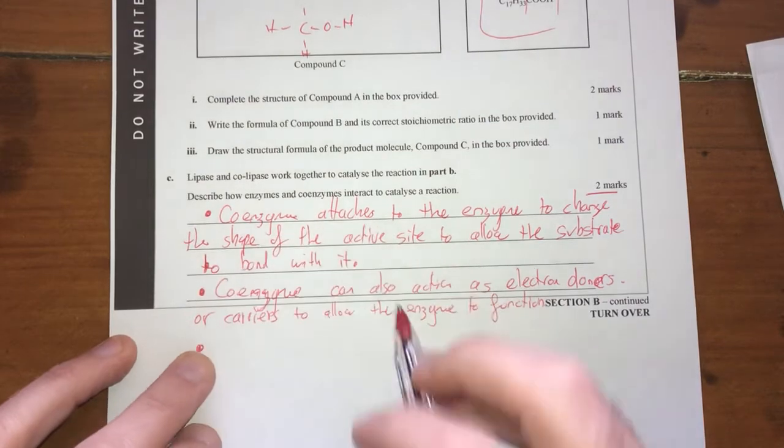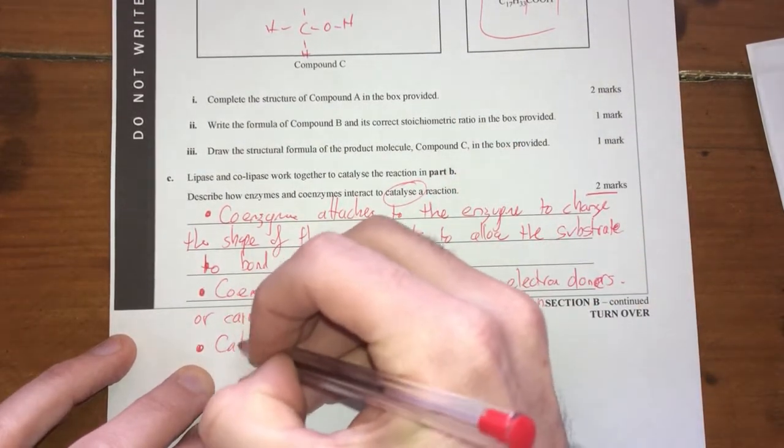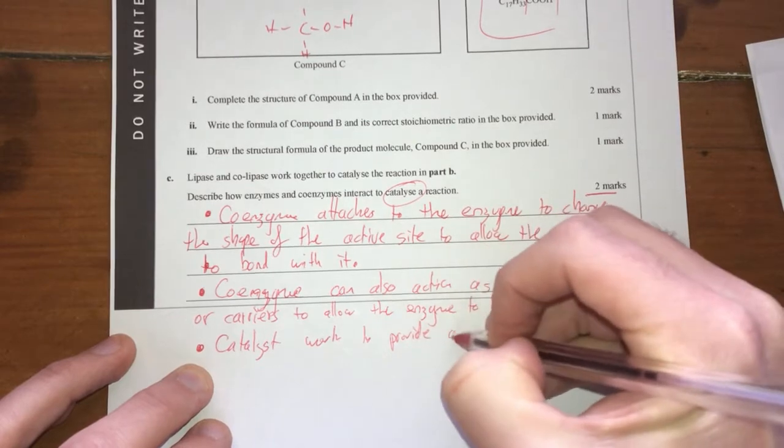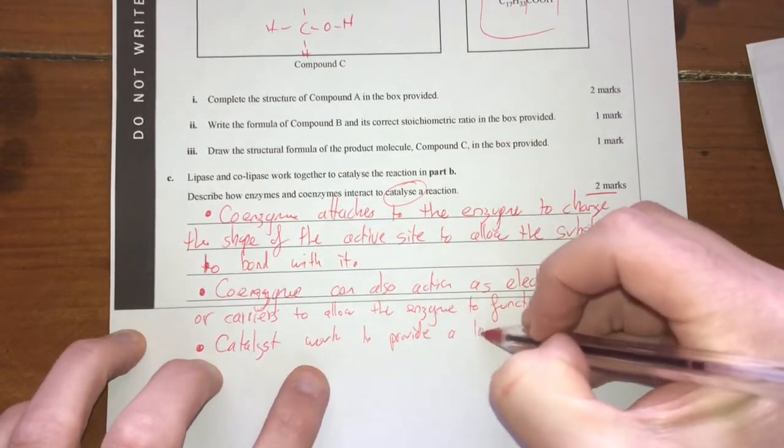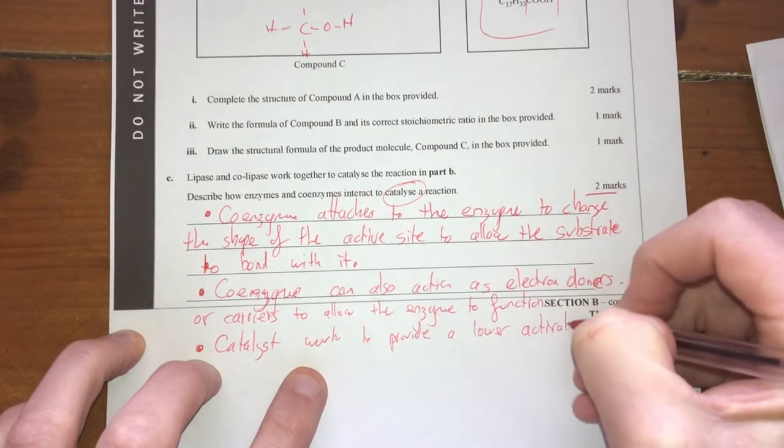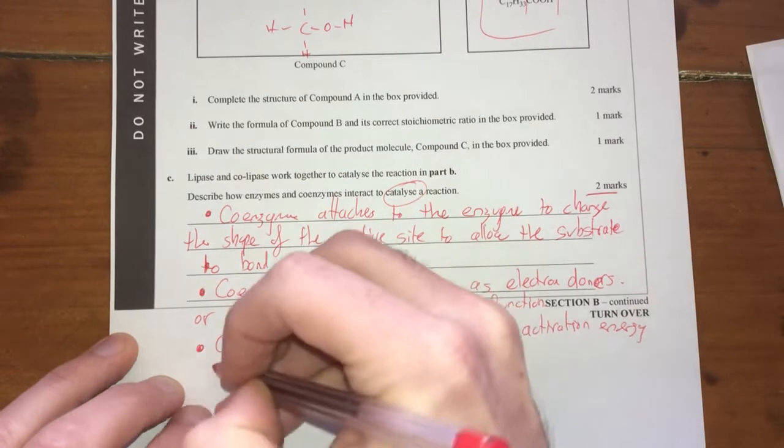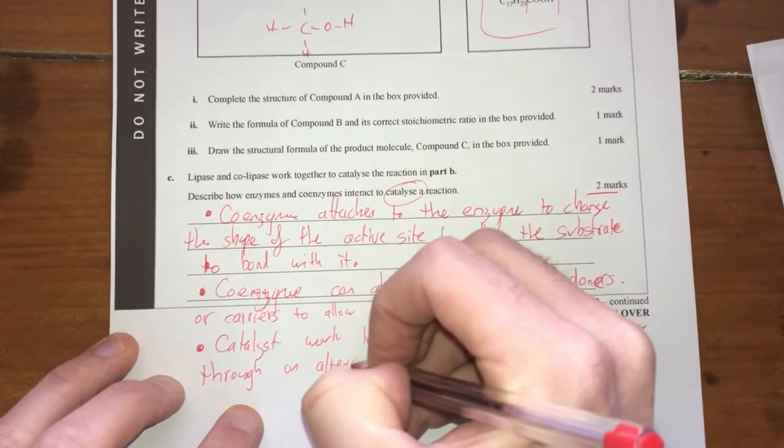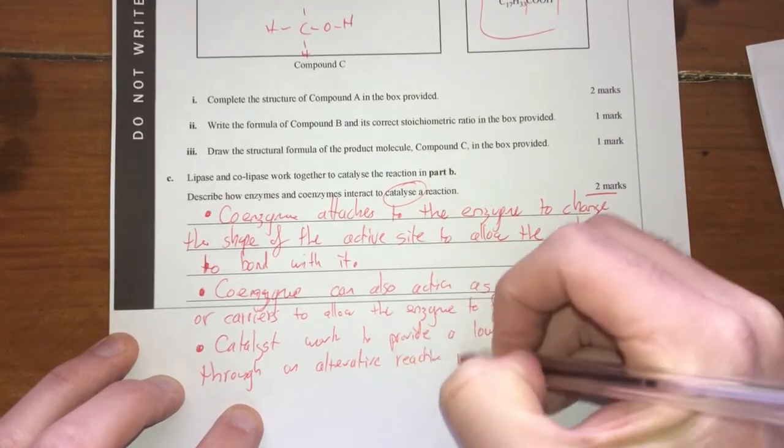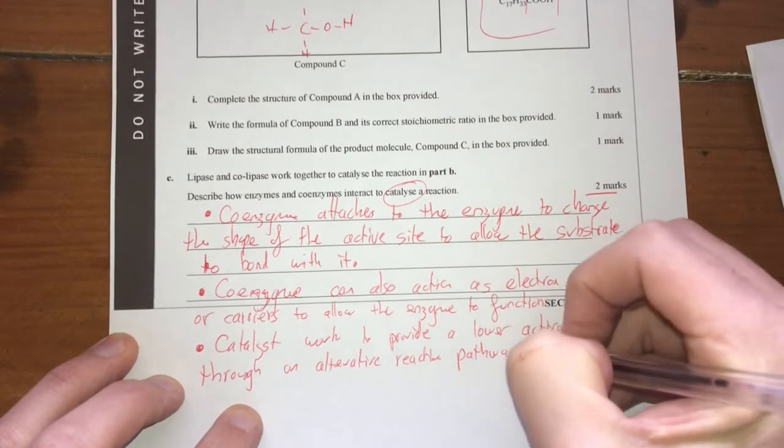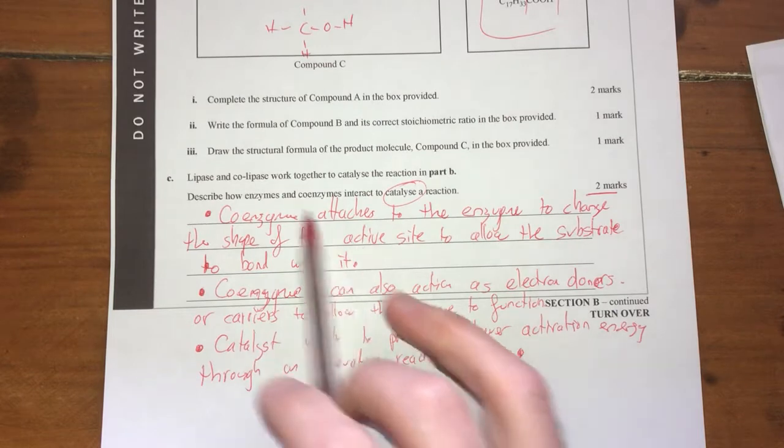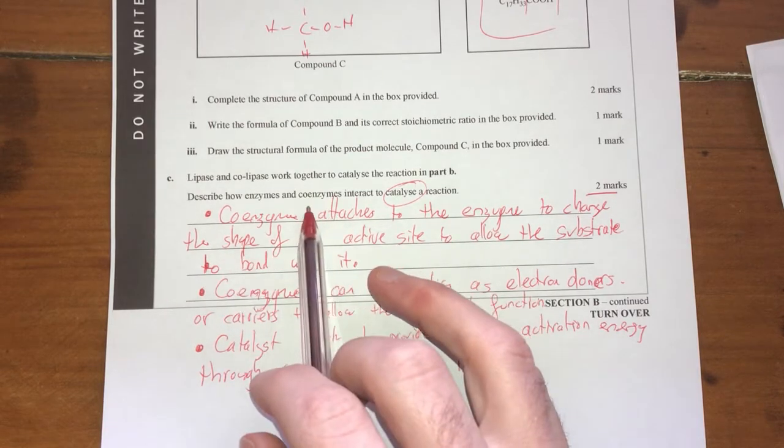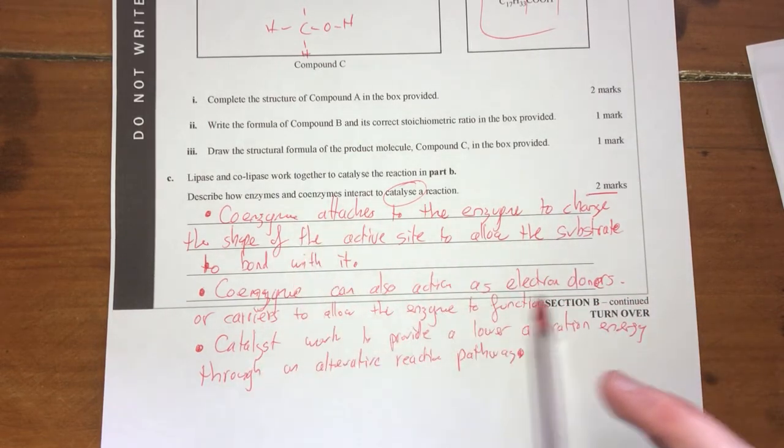One other thing we can also add is what catalyzed means. Catalysts provide a lower activation energy through an alternative reaction pathway. And that's again just me talking about anything I know about enzymes. Every time I see enzyme I start to talk about active site and the substrate bonding to the active site.